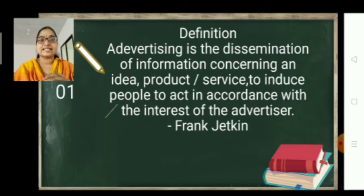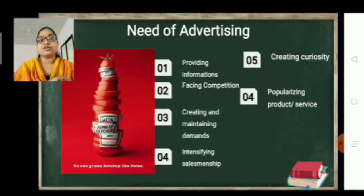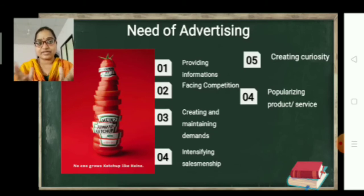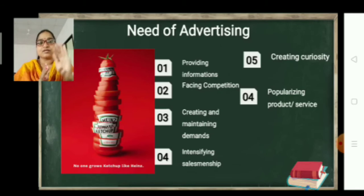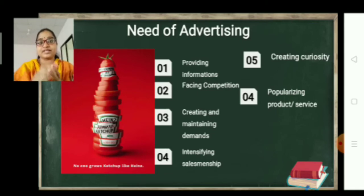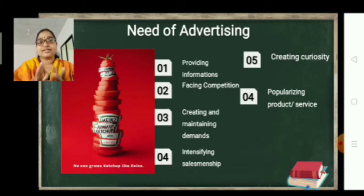This definition is given by Frank Zetky. Now we will see the need of advertising. The first need is providing information — every advertisement gives information to you. Second is facing competition. For example, the Heinz tomato ketchup advertisement gives a bottle shape to cut tomatoes and sticks their patch or slogan on every slice. This creativity shows how your tomato ketchup bottle will look, and with this creativity your product launches very well and more customers arrive.